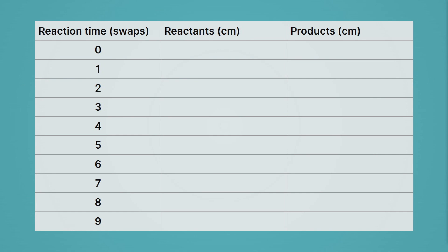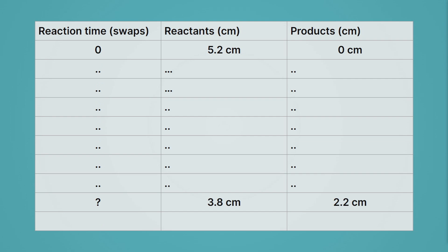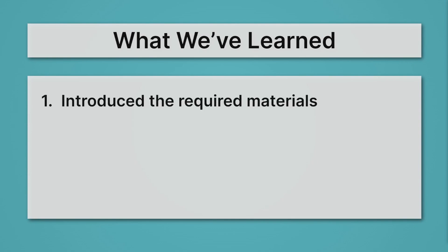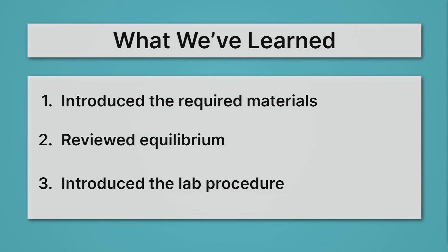What will this look like on our table? On the left is reaction time, measured in number of swaps. At zero swaps, you measure the height of reactants and products — you should have some height for reactants and zero for products. Then we'll continue performing swaps and remeasuring. Notice at the question mark swap we have 3.8 centimeters for reactants and 2.2 centimeters for products, and after one more swap it doesn't change — that indicates you've found dynamic equilibrium. Let's review: we introduced the required materials, reviewed equilibrium as a stable balance of reactants and products that is dynamic — the reaction still runs forwards and backwards but the balance isn't changing — and introduced the lab procedure simulating dynamic equilibrium with bowls of water.